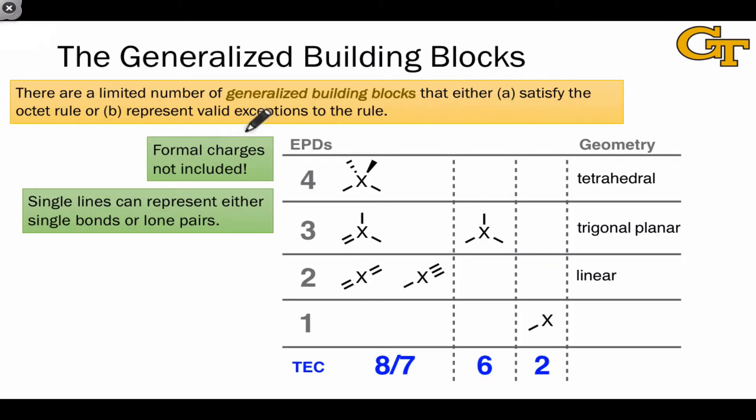The octet rule tells us that the total electron count around an atom tends to be 8 in organic molecules. From this rule and the fact that electrons travel in pairs, in bonds and in lone pairs, we can reason to the idea that there are a limited number of ways to arrange electrons around atoms in Lewis structures.